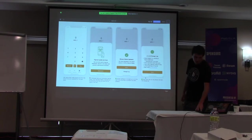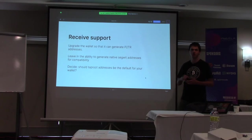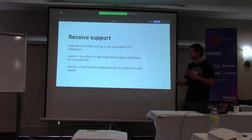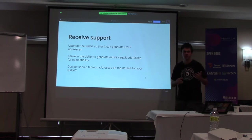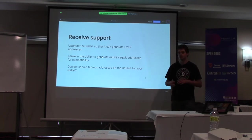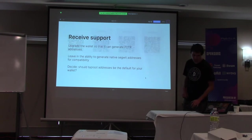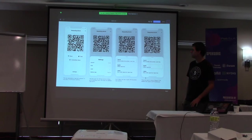Really, the bigger deal is receive support, and this is the one that's a little bit harder. You can see on the Bitcoin wiki that a lot more wallets are dragging their feet on adding this. You basically need to upgrade so it can generate pay-to-Taproot addresses, but also leave in the ability to generate native SegWit addresses. A key design decision: does your wallet default to Taproot, or does it still default to SegWit? Is Taproot a bleeding-edge feature the user has to enable, or do you just force them to use it? This was me taking assets from the UI kit and mocking up some Taproot ideas.